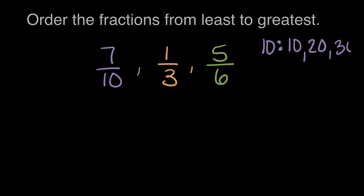How about thirty? Let's see, three, we can multiply three times ten to get thirty, so thirty works for three. How about six? Six times five equals thirty, so yes. Thirty can work to be our common denominator. Thirtieths, thirty is a multiple of ten, three, and six.